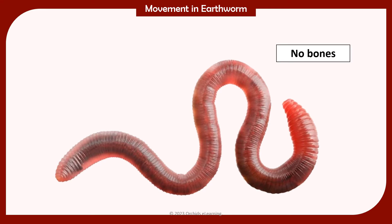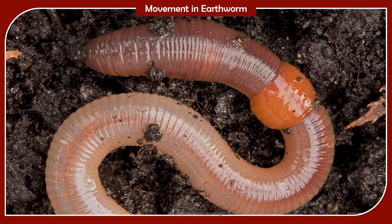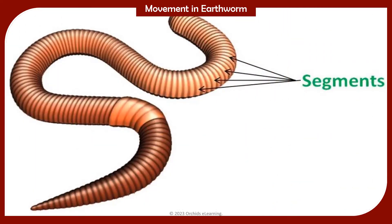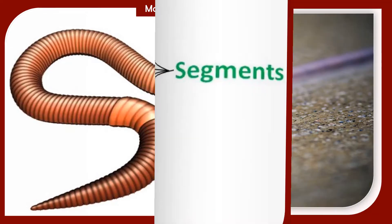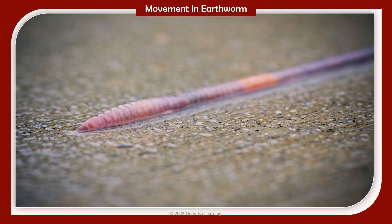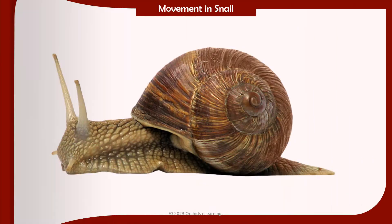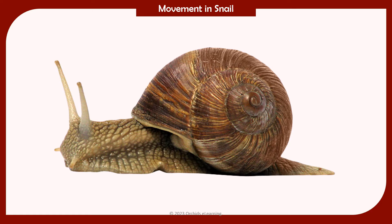Movement in earthworm: An earthworm is an invertebrate. It has a long tube-like body with no bones. Its body is maintained by the fluid present inside it. An earthworm's body is made up of several parts called segments. It moves by lengthening and shortening these segments. Its body secretes a slimy substance to help in movement. The segments also have tiny hair-like bristles that help the earthworm to grip the surface and pull its body forward.